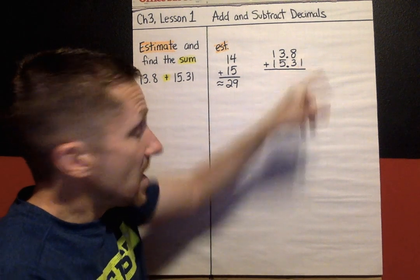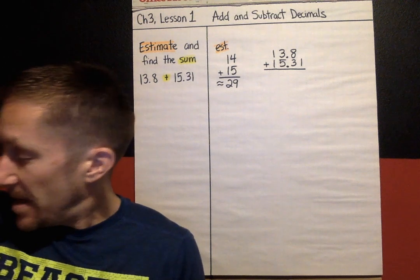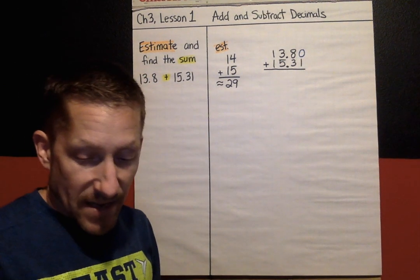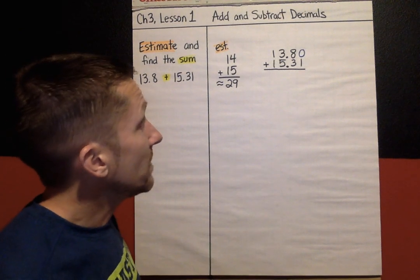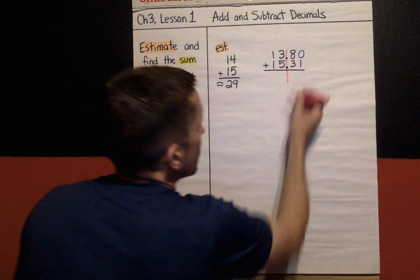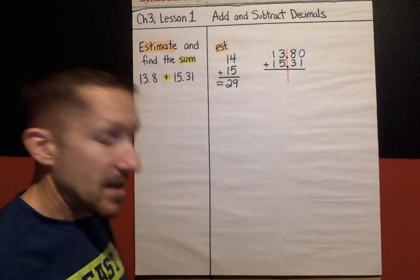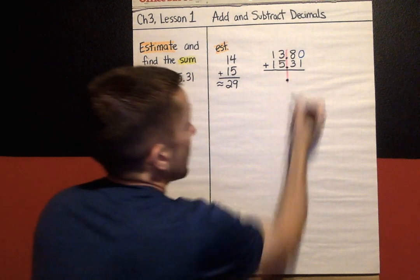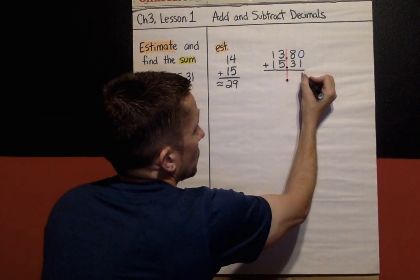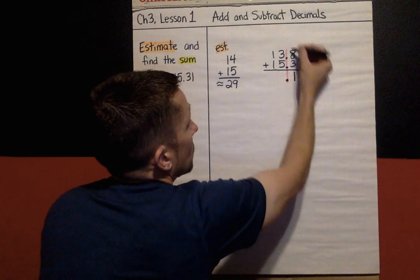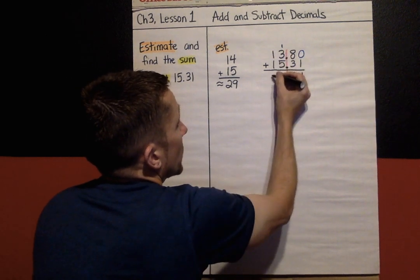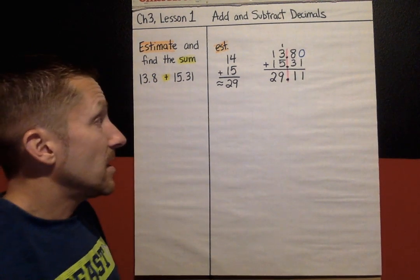Now, there's an empty spot right there. I can fill that in with a zero if I choose. So I can fill that in with a zero just to make it even if I want or I can leave it blank. But the key idea is this. Your decimals have to be lined up and in your answer, the decimal drops straight down. So I know that my decimal point is going to be right here. Now I can just add like normal. Zero and one is one. Eight and three is 11. So one carry the one. One and three makes four. Plus five is nine. One and one is two. And my answer is 29.11.